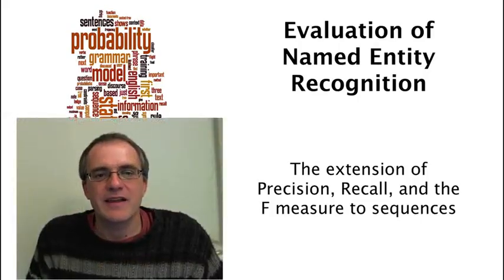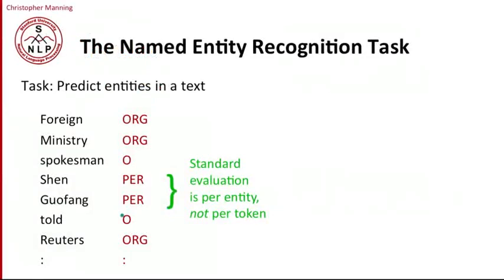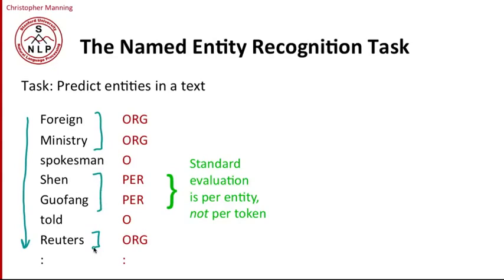Let me introduce how we evaluate named entity recognition. In the named entity recognition task, we have a sequence of word tokens, and what we want to do is predict entities. So we want to predict that these two words are an organization, these two words are a person, this one word is an organization. In general, we can have entity names that are several tokens long, and we want to identify both the boundaries of the entity and also its class — that this is a person.